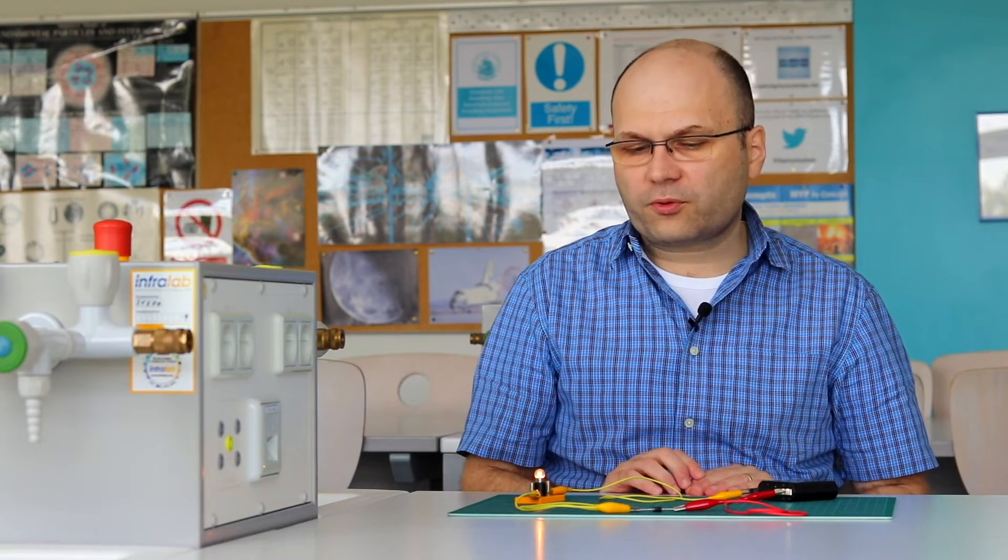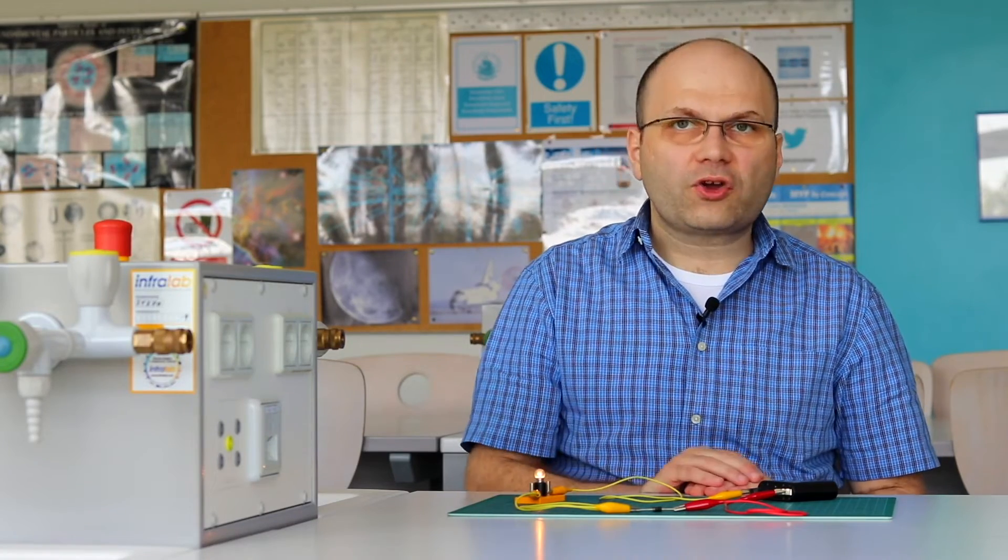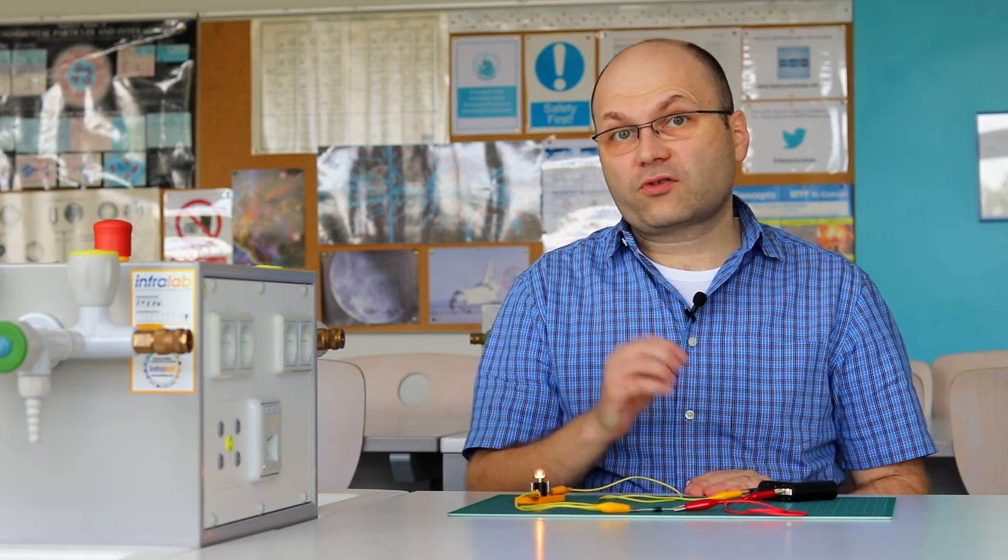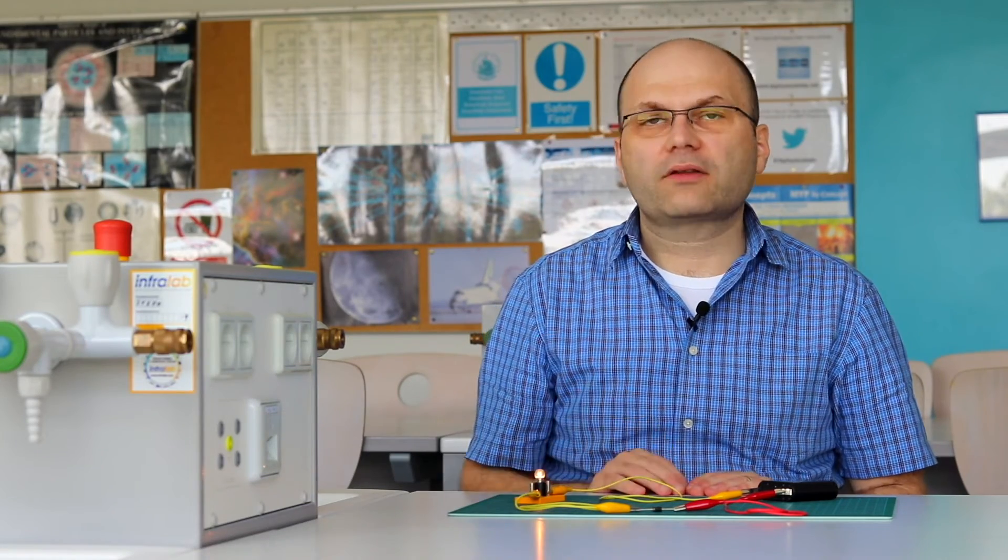As you can see, the brightness of the light bulb is not that different than what we had earlier when we did not have a diode in the circuit. That suggests that the potential difference across the diode is relatively small.